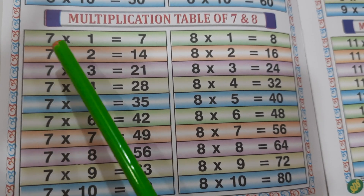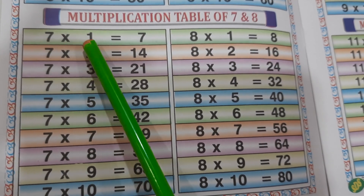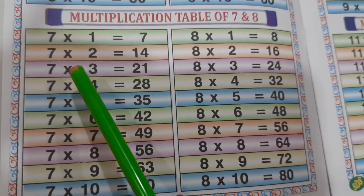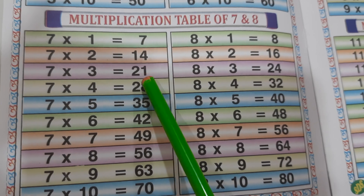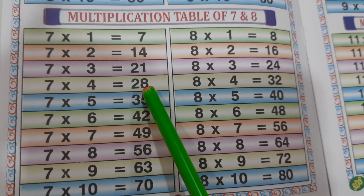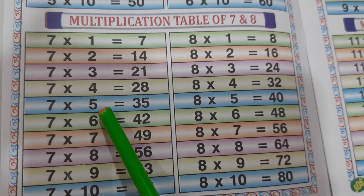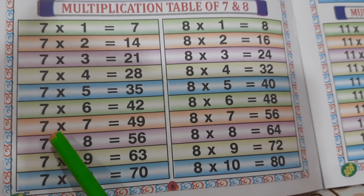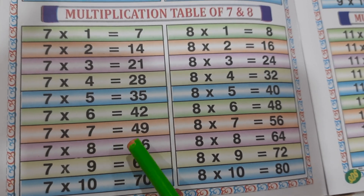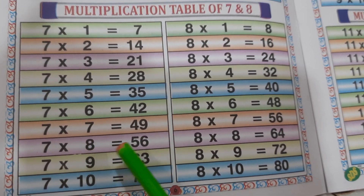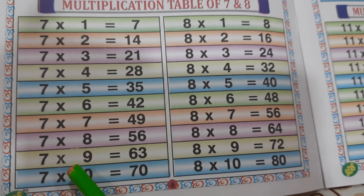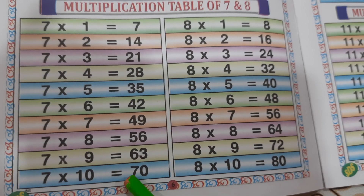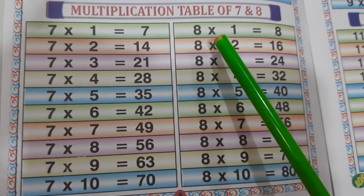7 1's are 7. 7 2's are 14. 7 3's are 21. 7 4's are 28. 7 5's are 35. 7 6's are 42. 7 7's are 49. 7 8's are 56. 7 9's are 63. 7 10's are 70. Table of 8.